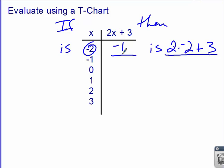Now my x value changes. So now it says, if x is negative 1, then 2x plus 3 is what? So I do it again. 2 times, now it's negative 1, plus 3. 2 times negative 1 is negative 2. Negative 2 plus 3 gives me positive 1. Now my x value changes again. So if x is 0, then 2x plus 3 is what? So I plug it in. 2 times 0 is 0, plus 3 is 3.